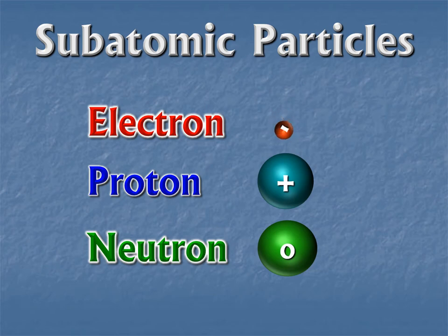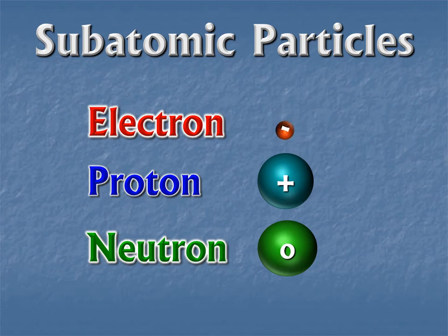These are your everyday pieces of matter that make up the world around us. An electron is negatively charged, and a proton is positively charged — 'pro,' positive, like being for something. And then there's the neutron: it is neutral, meaning no charge. So remember: the electron is negative, the proton is positive, and the neutron has no charge at all.